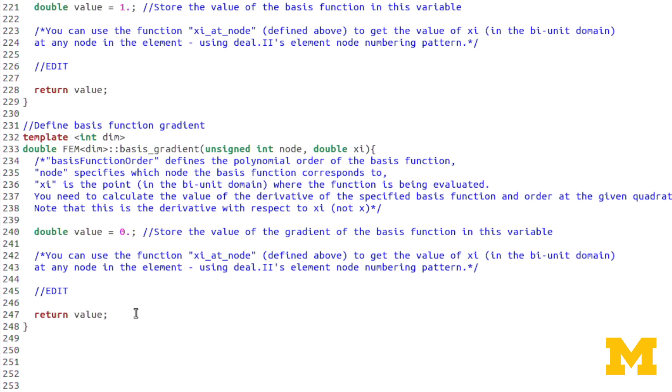You need to be sure to use deal.II's node numbering here. All right. So that's very important for you to remember that. So if you're doing your if statements, remember to do 0 is always at the left, 1 is always at the right. And then you count up on your mid-side nodes, as we showed on the previous slide. If you use the function xi at node in this generalized formula, it's already taking into account the deal.II node numbering.